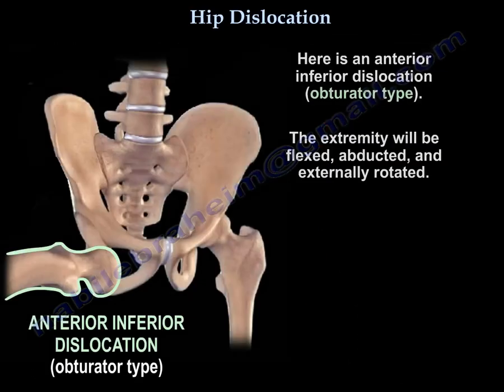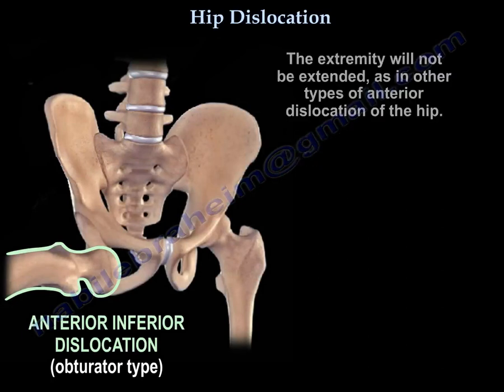Here is an anterior inferior dislocation — we call it the obturator type — and the extremity will be flexed, abducted, and externally rotated. The extremity will not be extended as in other types of anterior dislocation of the hip.